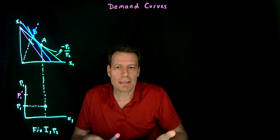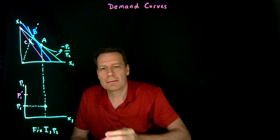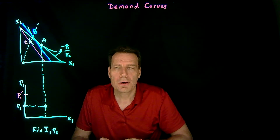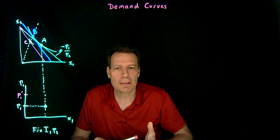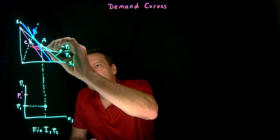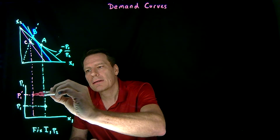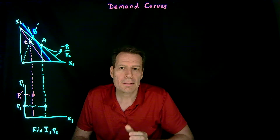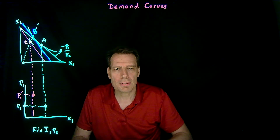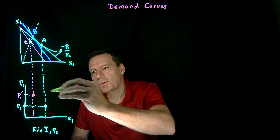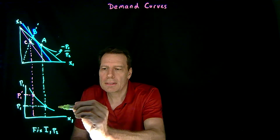That tangency would be our final optimal bundle at the new higher price — that gives us point C, where the consumer ultimately lands. The demand curve tells us what the consumer is actually going to do, not what she would do if she gets compensated. So the demand curve takes point C, brings it down to the lower graph, and says: at this higher price, this is the quantity demanded. We can do this for lots of different price changes and trace out what the demand curve looks like, or we can use these two points to estimate it roughly.